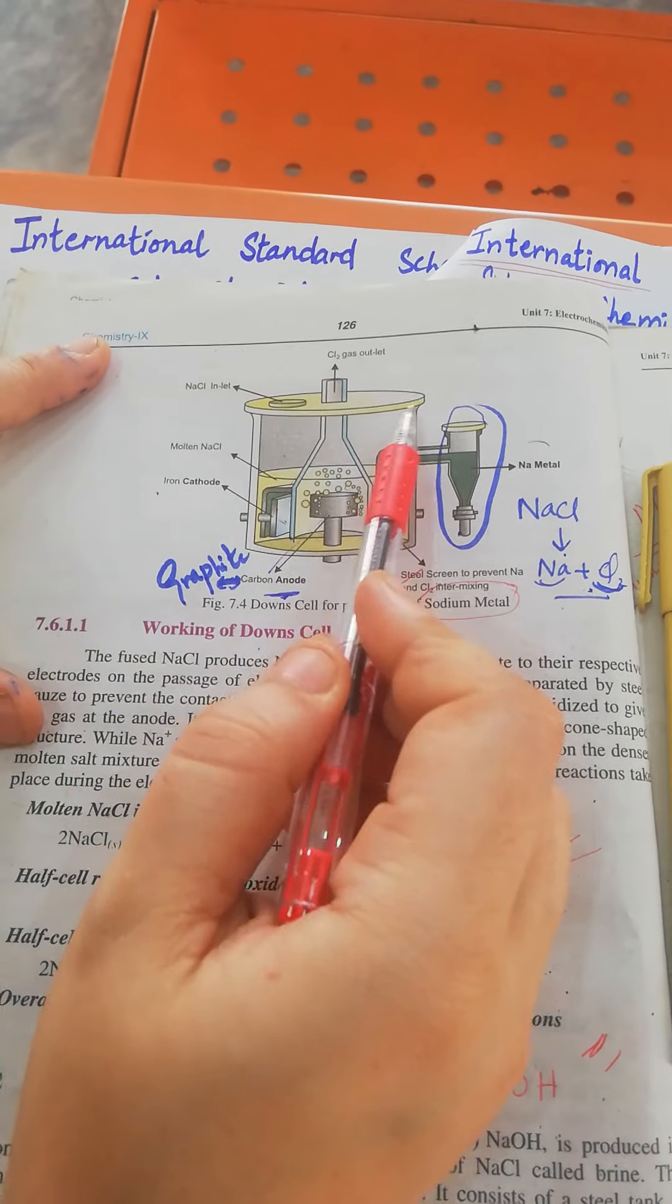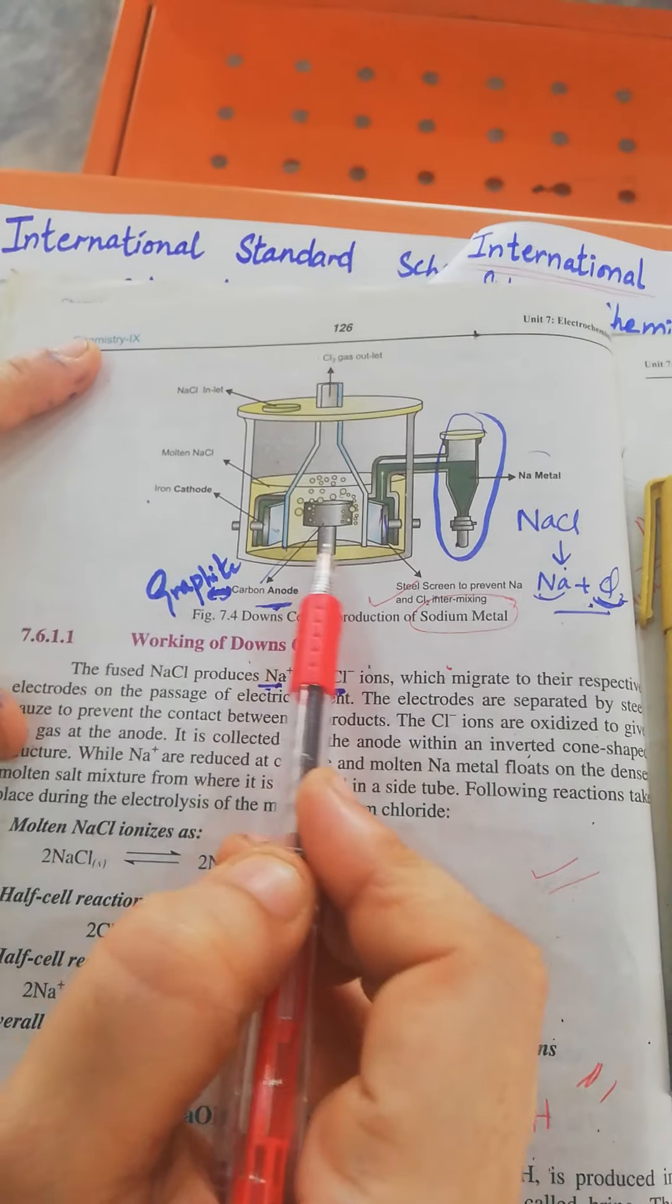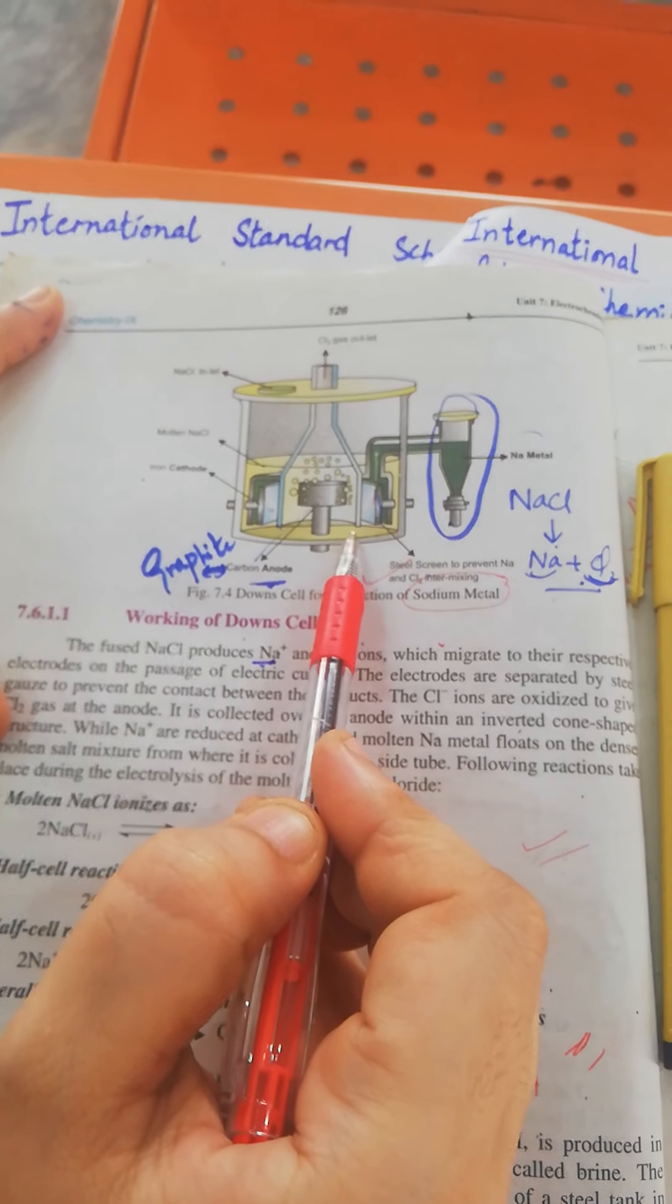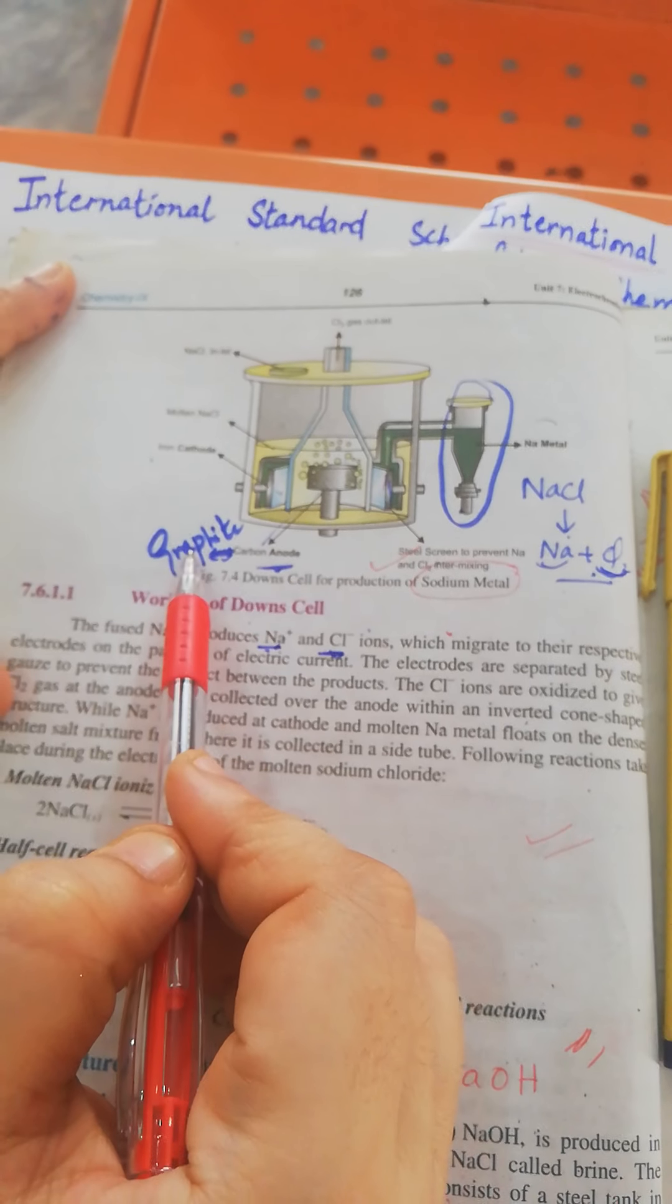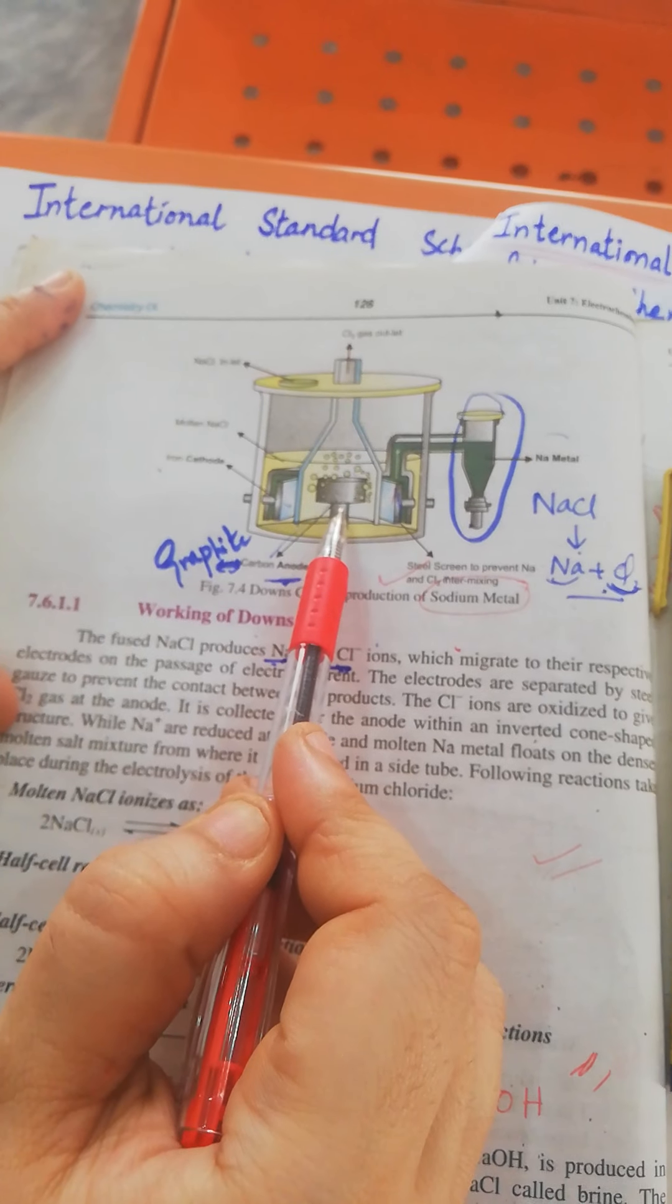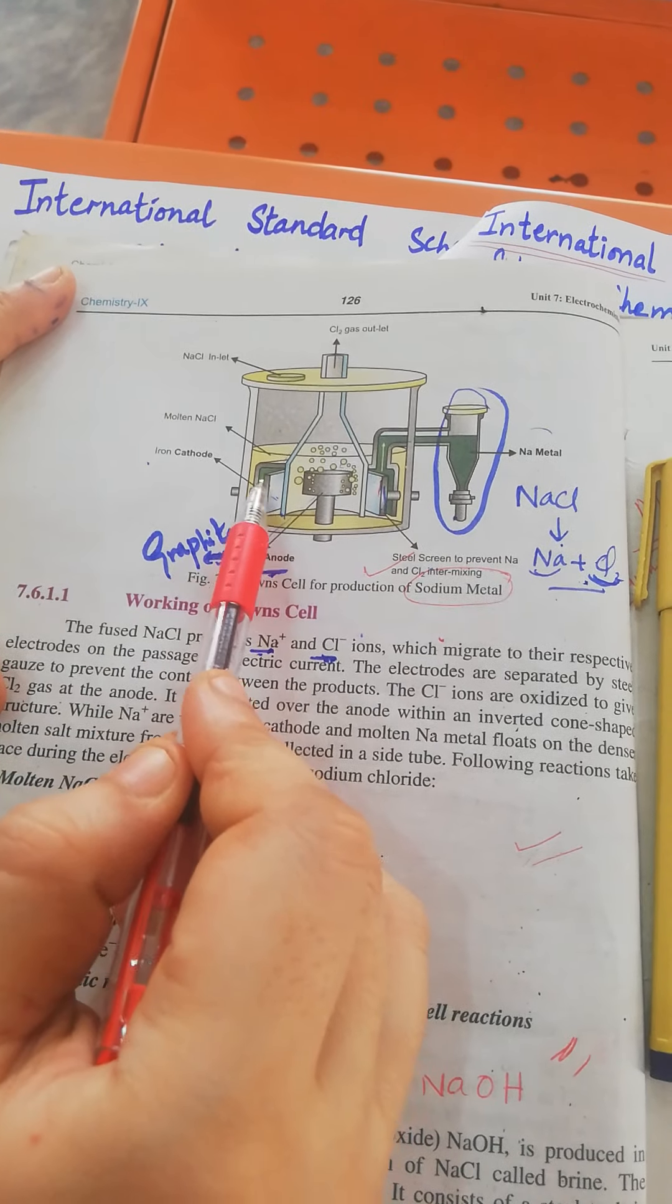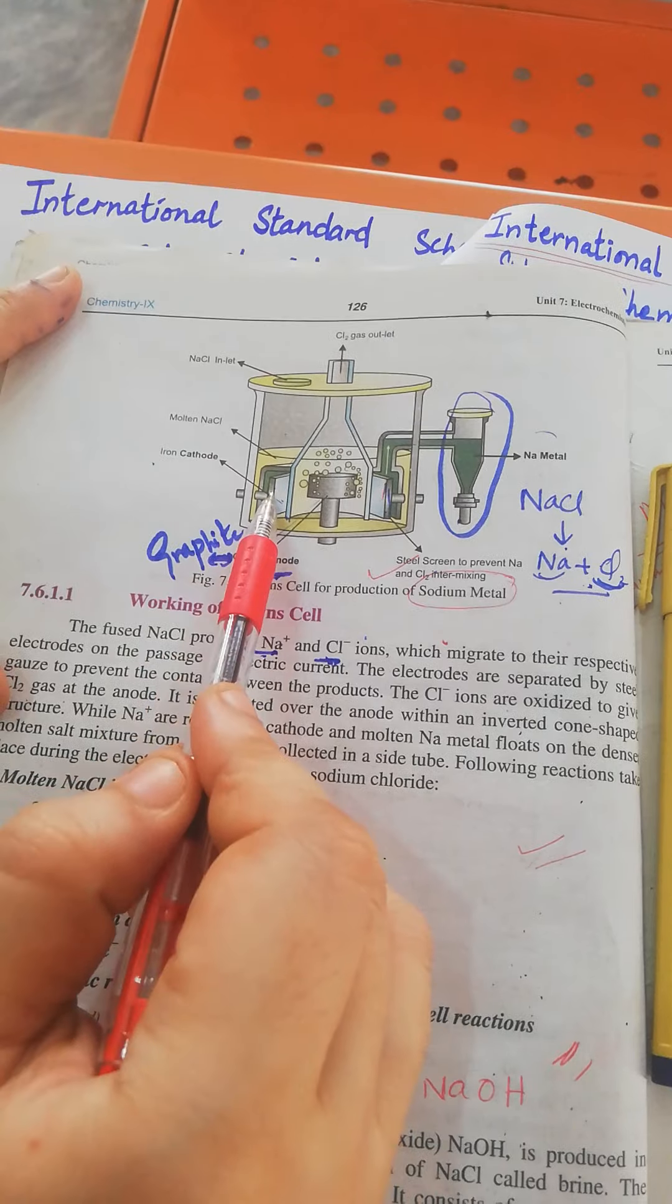This is a circular-shaped furnace. It contains fused sodium chloride. At the center of the cell is a graphite or carbon anode. The cathode is made of iron or steel.